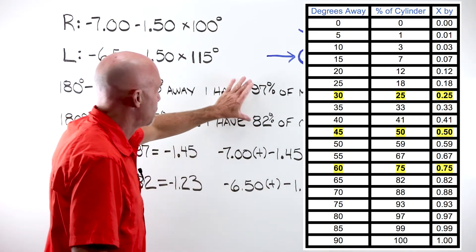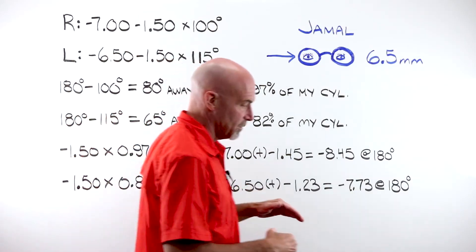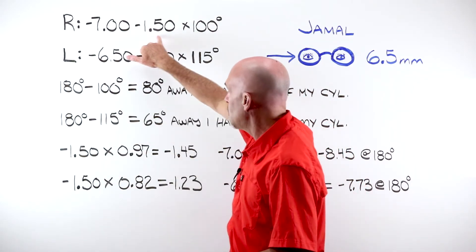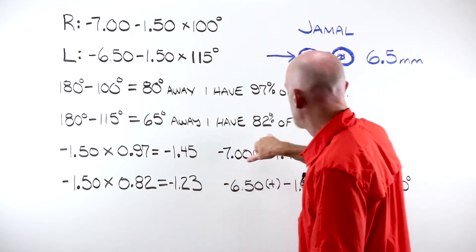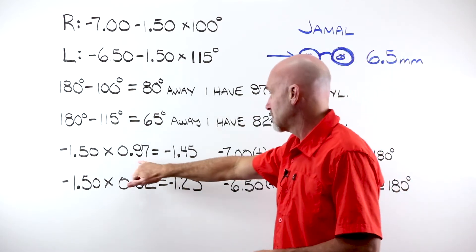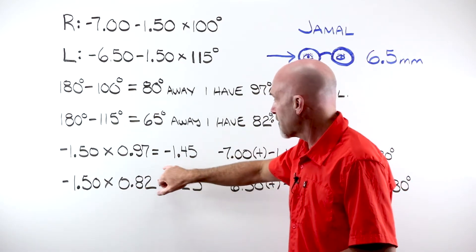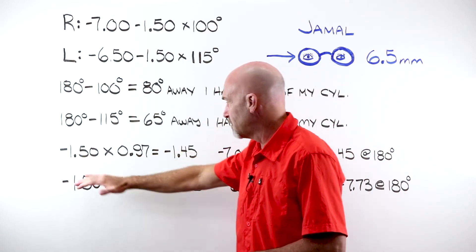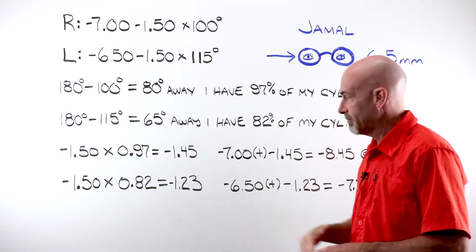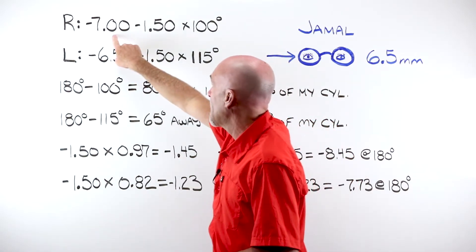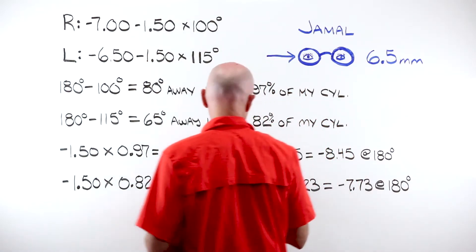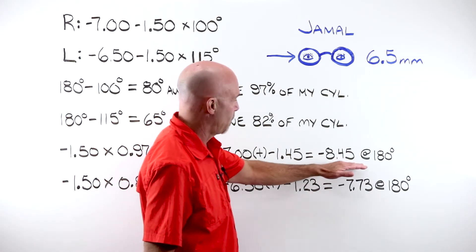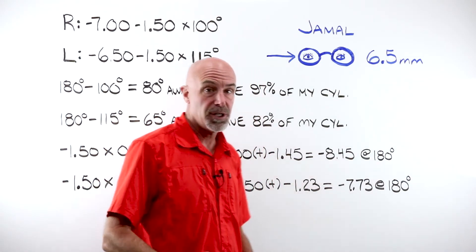So now I have to figure out how much of that cylinder, what the exact amount is. If I take my 150 and I multiply it times my 97%, change it to a decimal, it tells me that I have minus 1.45 of my minus 150 in play. If I take this cylinder value and I add it to my sphere value, minus seven plus 1.45 I end up with minus 8.45 at 180 degrees. That is the power that I need to solve the problem for the right eye.